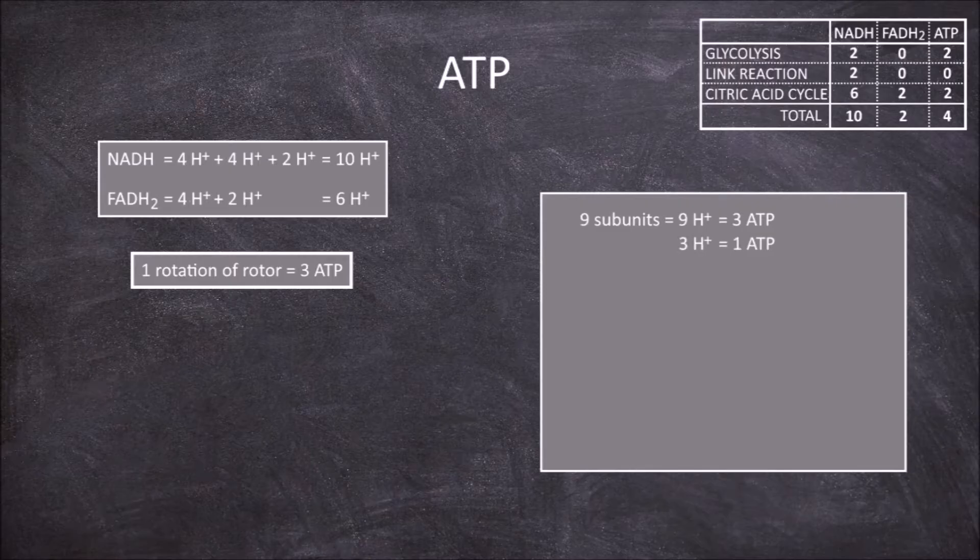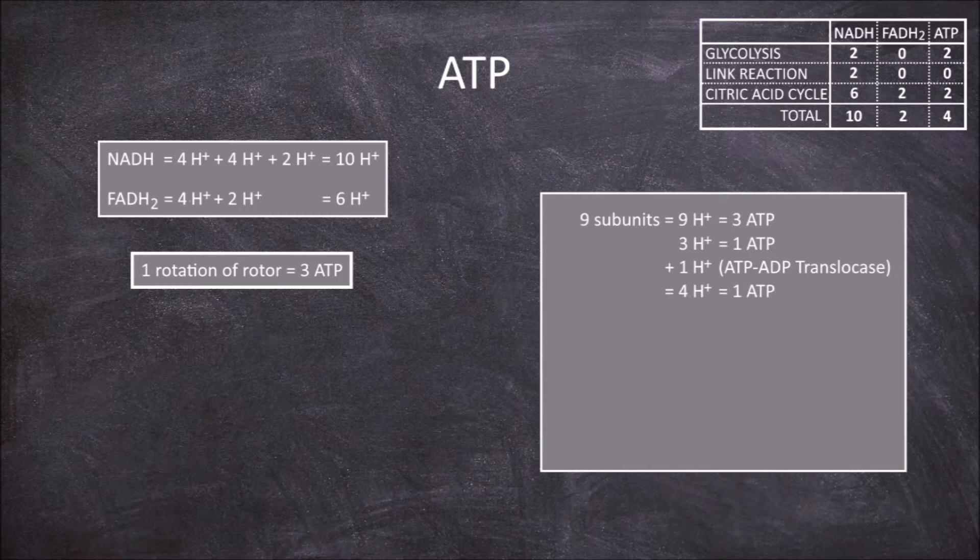This equates to 3 hydrogens to make a single ATP. A hydrogen proton is also used in the ATP-ADP translocase to get the ATP out of the matrix, raising this number to 4 hydrogens per ATP molecule.